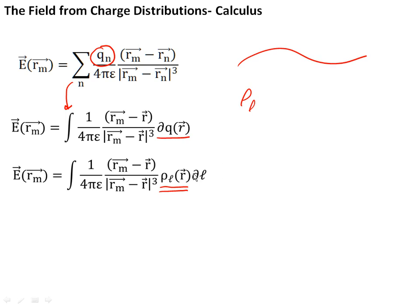And then essentially you simply multiply by each little section, dL. And if you do this integral, and you'll see some examples in any electromagnetics textbook, you can calculate the electric field from a line of charges.